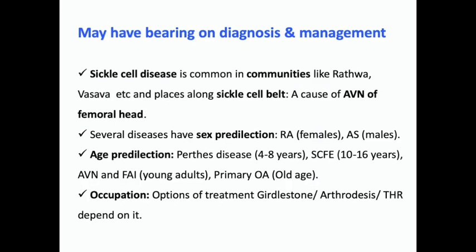All these demographic details have a bearing on diagnosis and management. For example, sickle cell disease normally comes from belts with a higher incidence, correlating with a diagnosis of AVN. Certain sexes are more related to certain diseases like rheumatoid arthritis and ankylosing spondylitis. Age is very important — Perthes disease, SCFE, DDH would each present at a particular age. Occupation will tell you something about the disease and help decide on management.